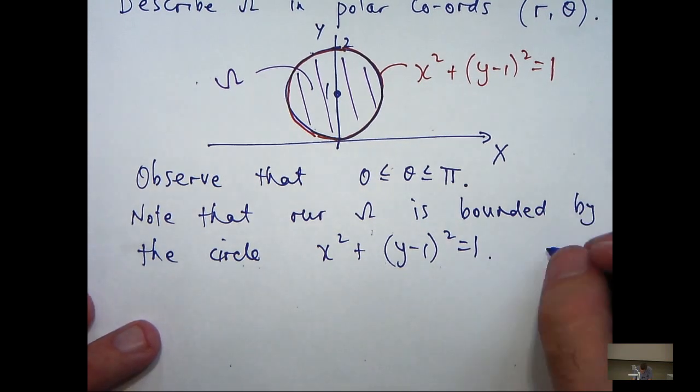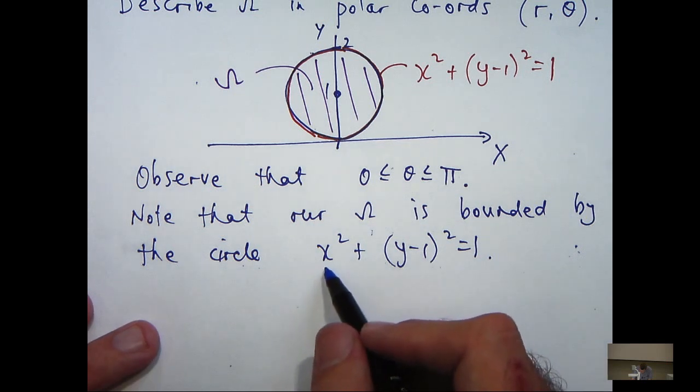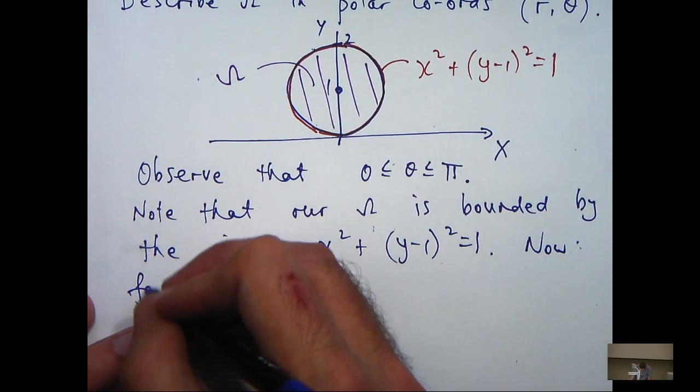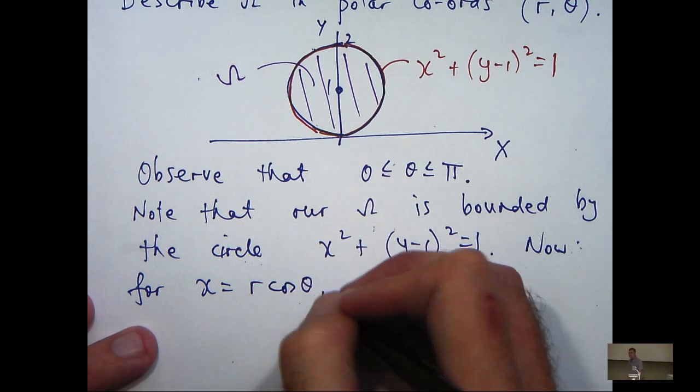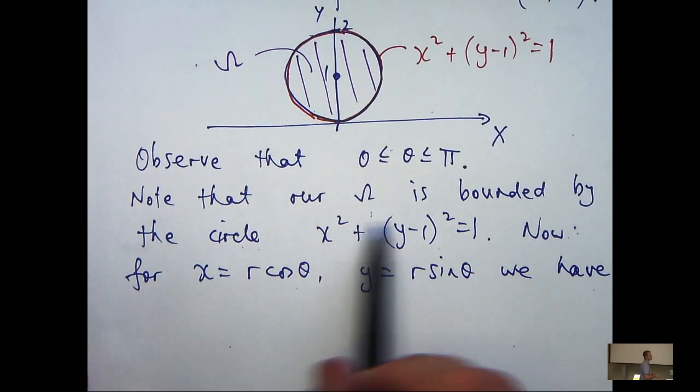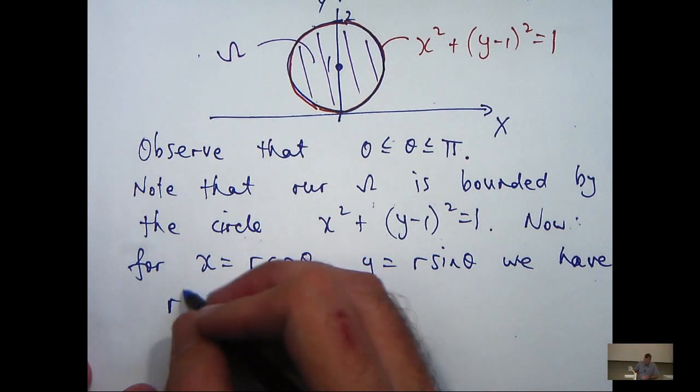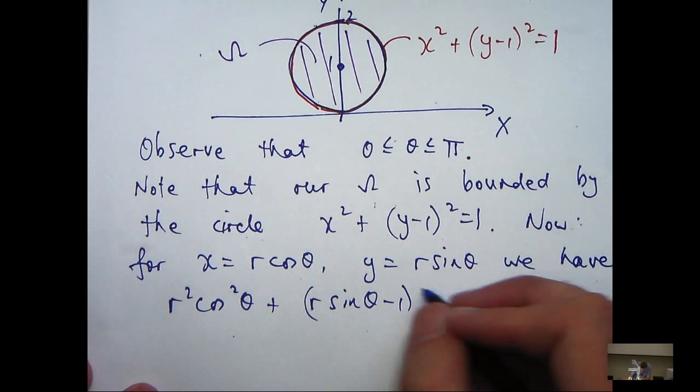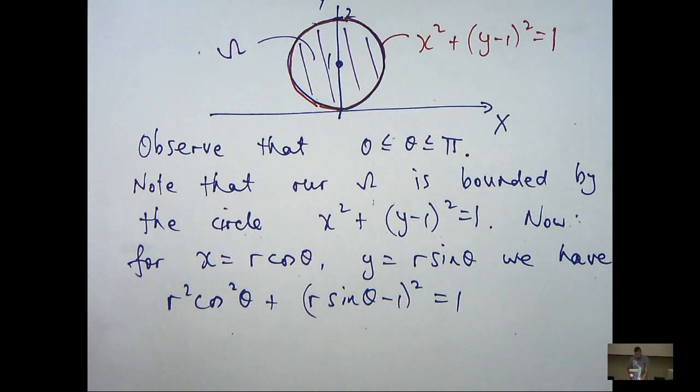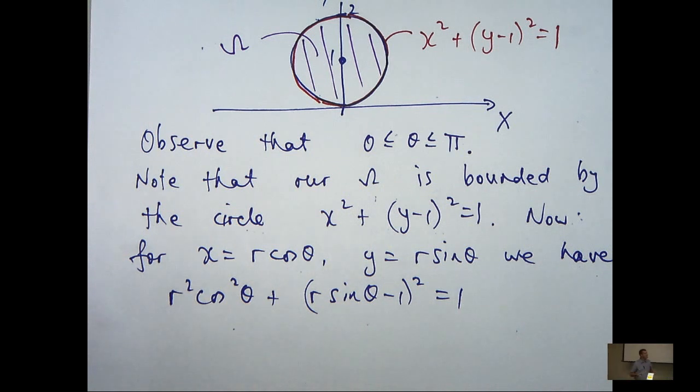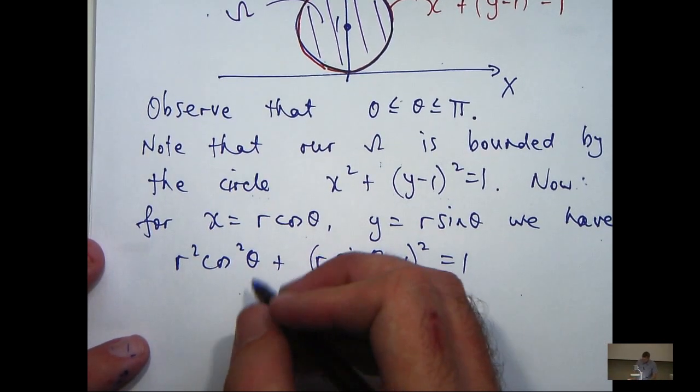So what I'm going to do is make a substitution x equals r cos theta, y equals r sin theta. So just substituting in, I'll get r squared cos squared theta plus r sin theta minus 1 all squared equals 1. So what I would like to do now is simplify. I can expand this bracket and use r squared cos squared theta plus r squared sin squared theta equals r squared.